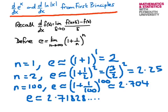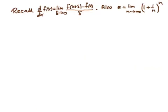This number is very special and very important, and the reason it is so important is because of its derivative property. What we now want to do is obtain that derivative property. Here are the two formulae we'll need: the definition of the derivative as a limiting procedure, and the definition of e as a limit.